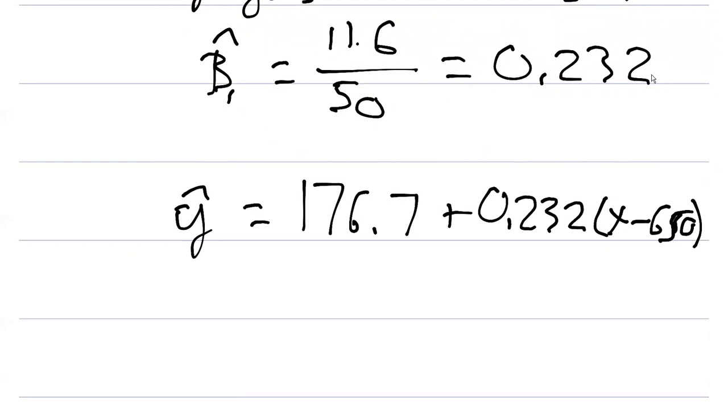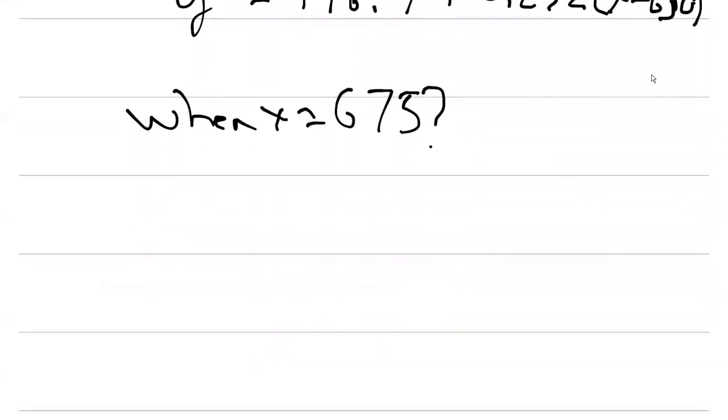So the value of this is what about when x equals 675? That is, what is the estimated yield if we put in $675 per acre to produce that yield?